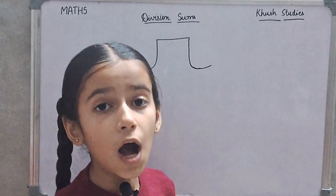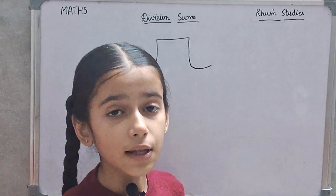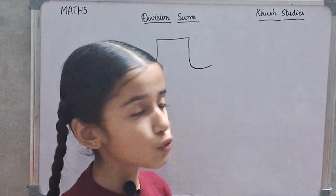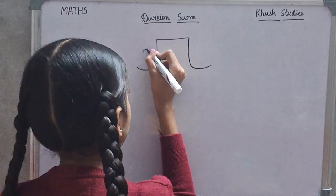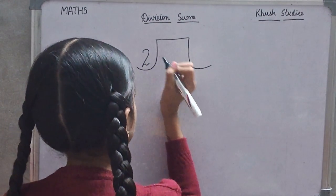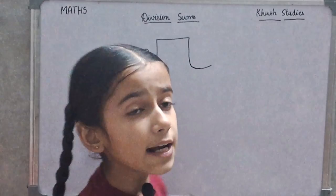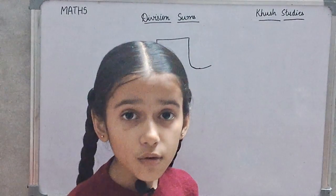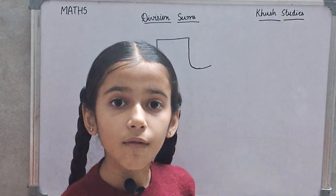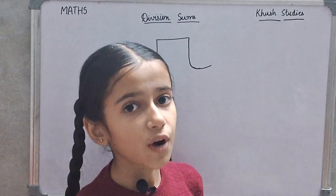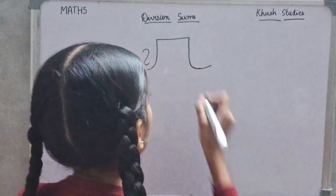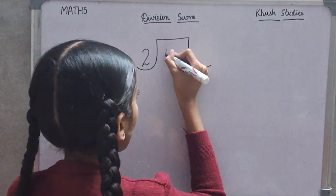How many baskets? 2. We will write here 2. And how many mangoes? 12. We will write here 12.